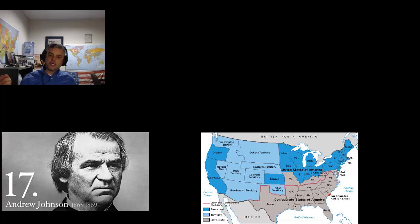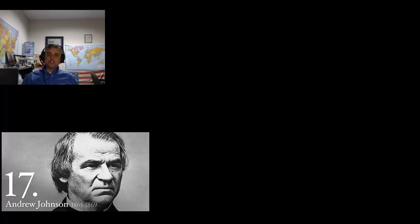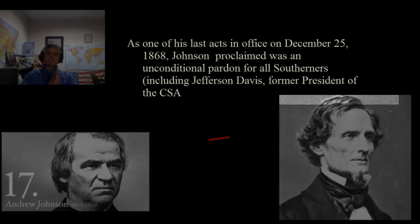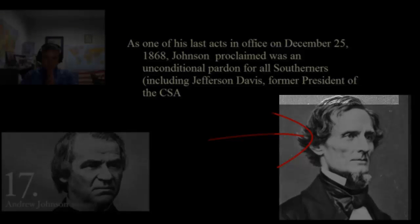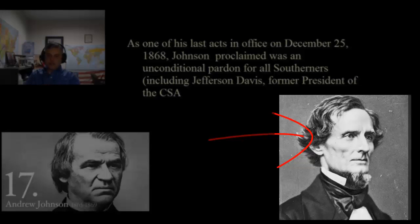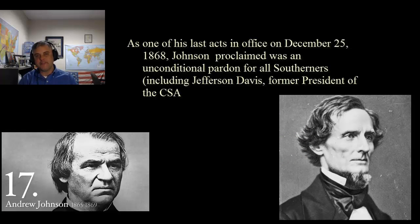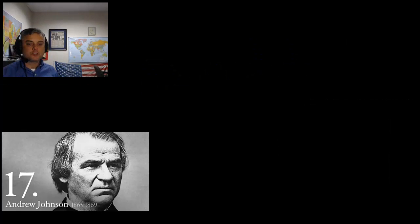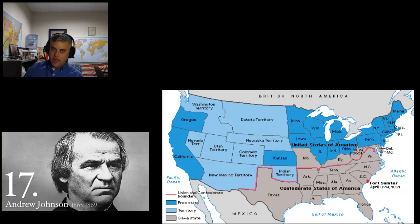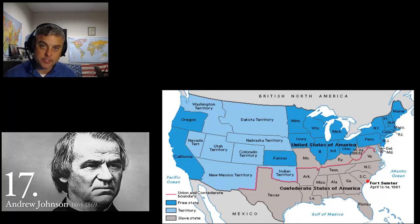During his three years in office, Johnson proclaimed three executive amnesties, each more liberal than the former. As one of his last acts in office, on December 25th of 1868, Johnson proclaimed an unconditional pardon for all Southerners, including Jefferson Davis — the former Confederate States of America's president. By December of 1865, all regular civil administrations within every single state except Texas were back in power, so all the states were back within the Union except Texas.